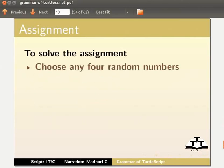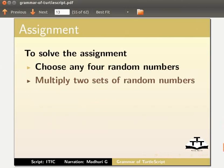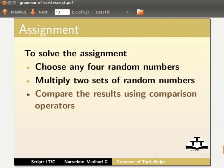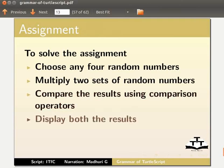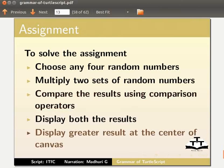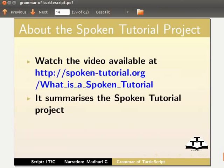Choose any 4 random numbers, multiply 2 sets of random numbers, compare the results using comparison operators, display both results, and display the greater result at the center of the canvas. You can choose any equation you like. Watch the video available at the given URL — it summarizes the Spoken Tutorial project.